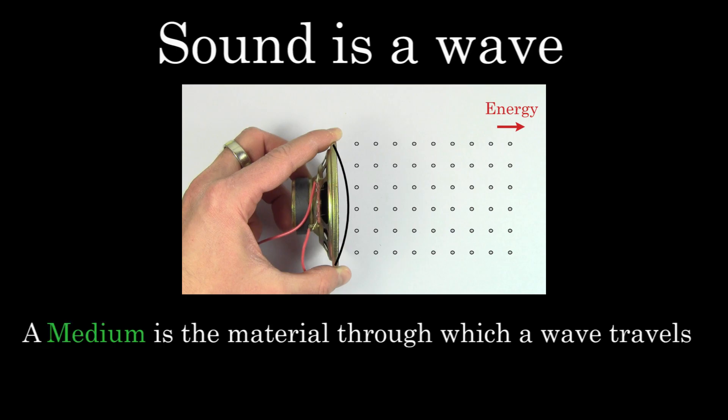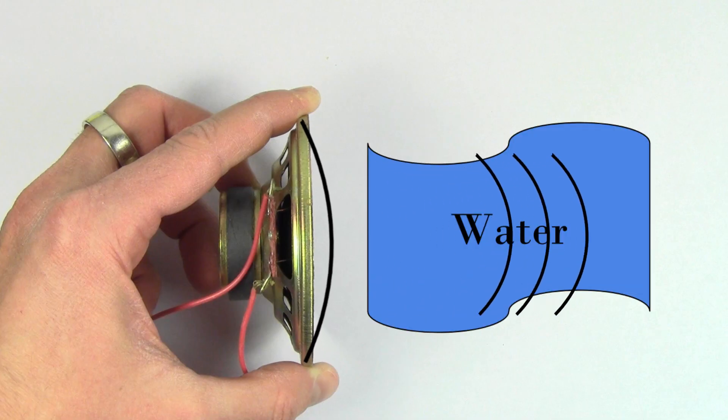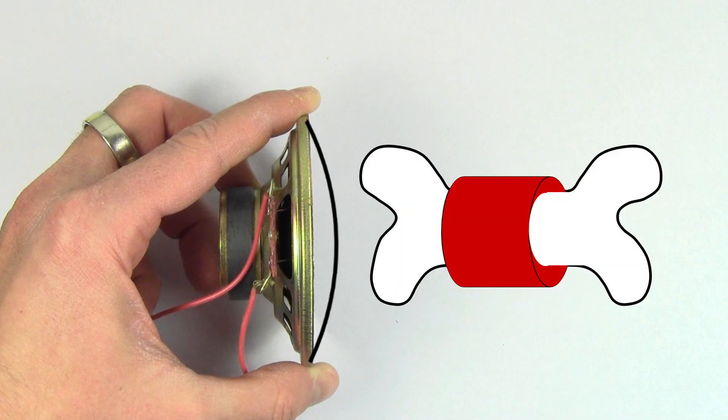Medium is a fancy word for the material or substance through which a wave is traveling. Air is typically the medium for situations involving sound waves, but sound waves can travel through all kinds of different materials, like water, metal, or even human flesh and bone.